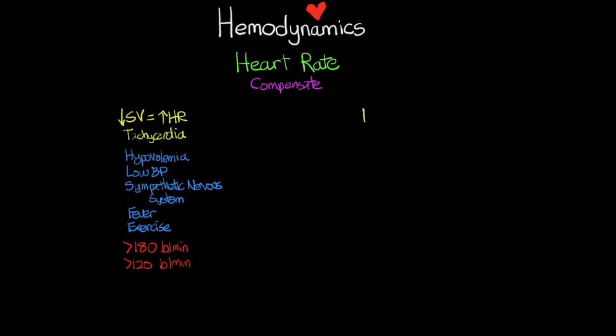On the flip side, if we have increased stroke volume, this leads to a decreased heart rate — bradycardia. A great example is athletes, who have strong cardiac muscles and a great stroke volume, so their heart rate compensates by lowering. You'll often see these patients with heart rates in the 40s and 50s while being totally fine.